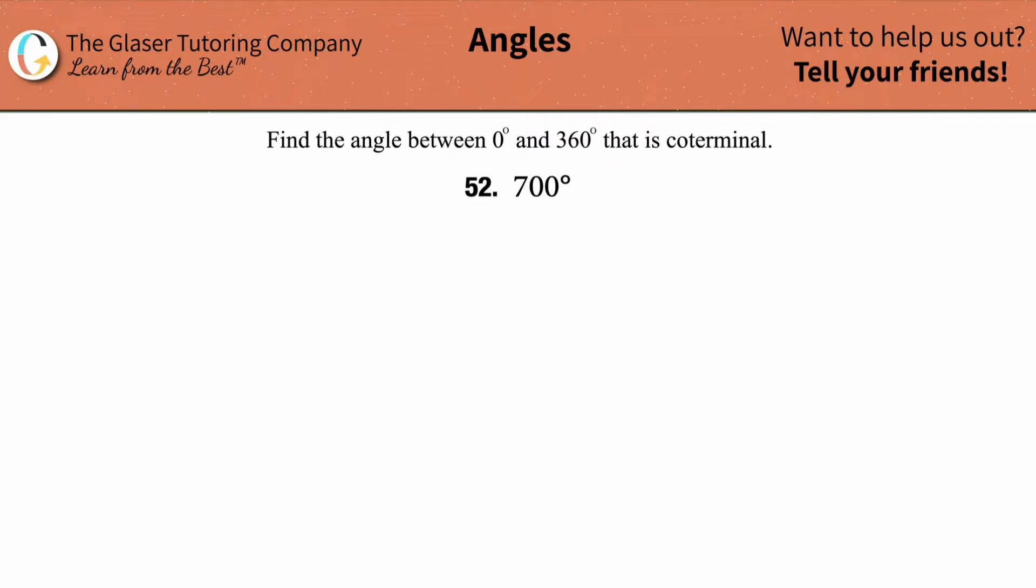Find the angle between 0 and 360 degrees that is coterminal with the angle of 700 degrees. So the first step of this is to actually graph the given angle of 700 degrees. Since it's positive, we know we're going to be rotating counterclockwise around this, and all of our degree measurements now are going to be positive.